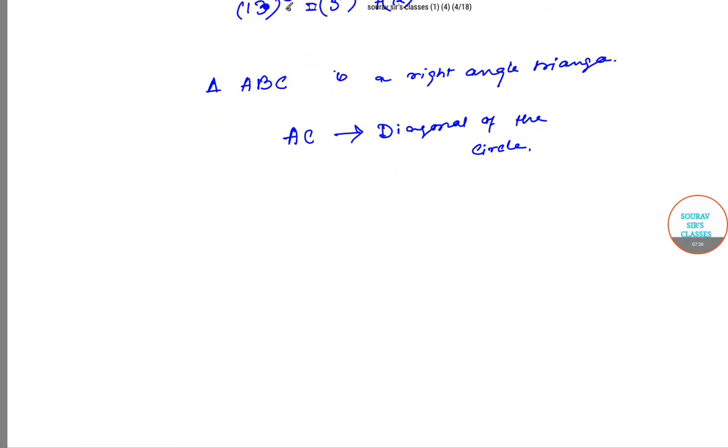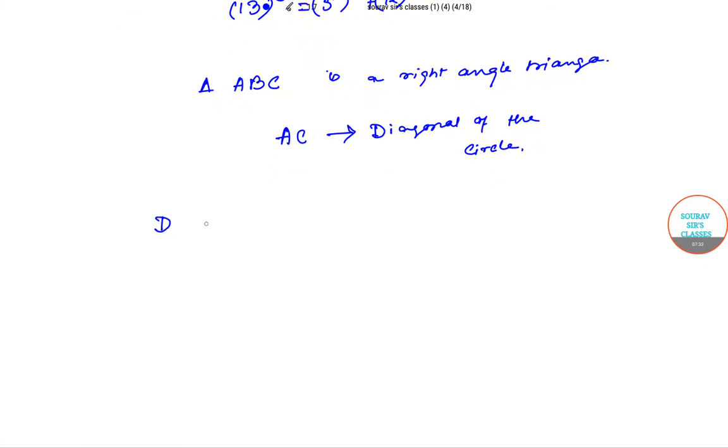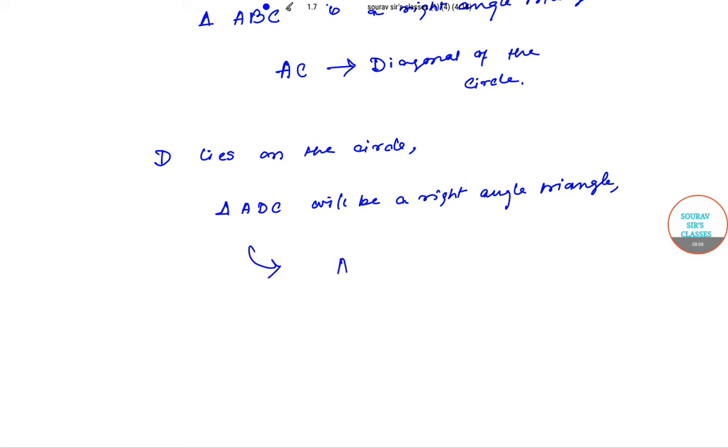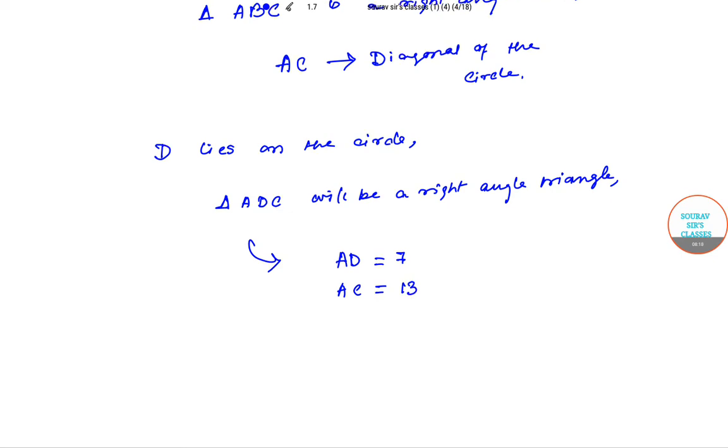So AC is the diagonal of the circle. You see that is already shown in the picture. Now again, point D lies on the circle, so the triangle ADC will be a right angle triangle.